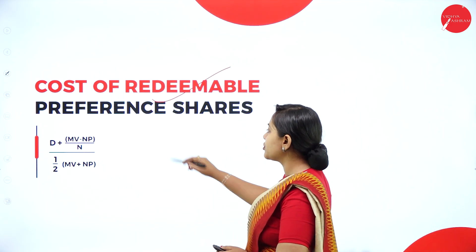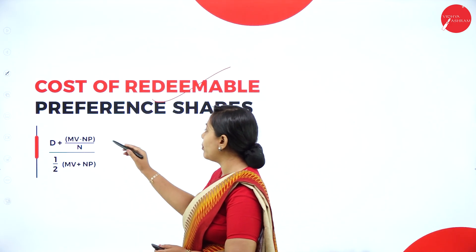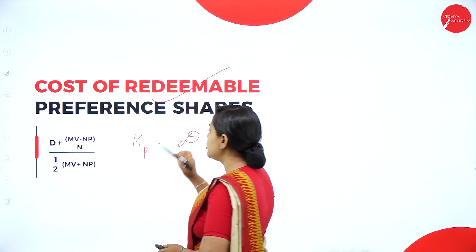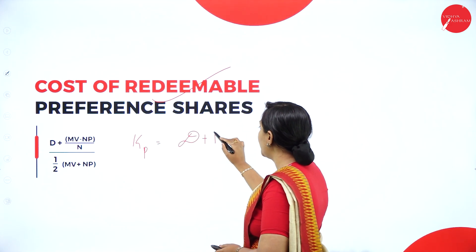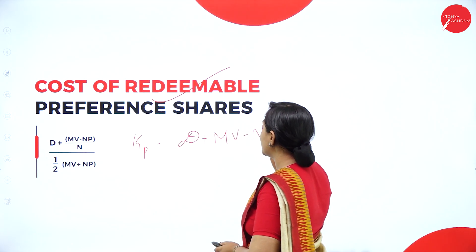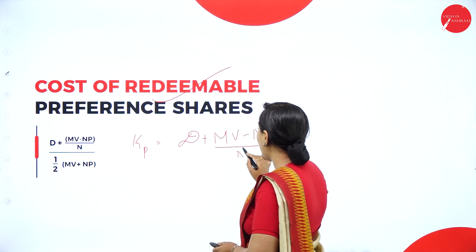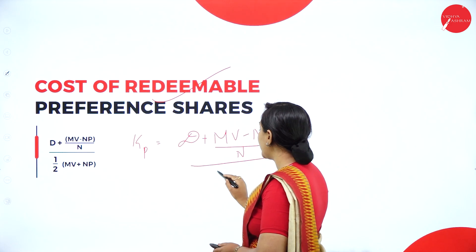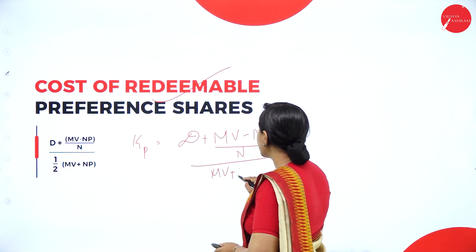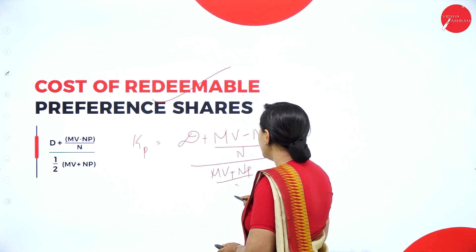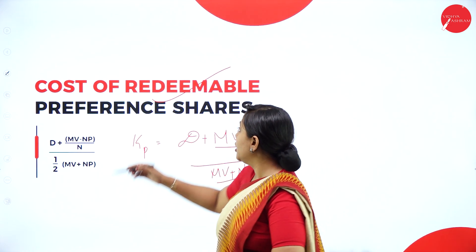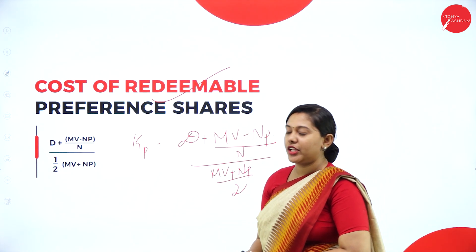The formula for cost of redeemable preference shares is: [Preferential Dividend + (Maturity Value − Net Proceeds) / N] divided by [(Maturity Value + Net Proceeds) / 2]. This is the formula for redeemable preference shares.